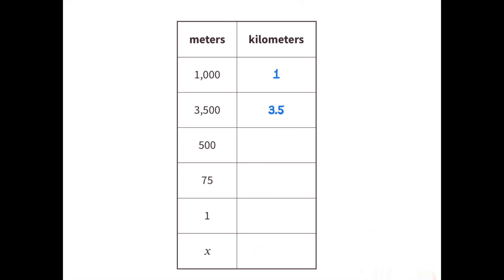500 is half of 1,000, so if 1,000 meters equals 1 kilometer, then 500 meters would equal a half a kilometer, or 5 tenths of a kilometer. I'm noticing a pattern. The decimal point is being moved to the left three places to make that value 1,000 times smaller.